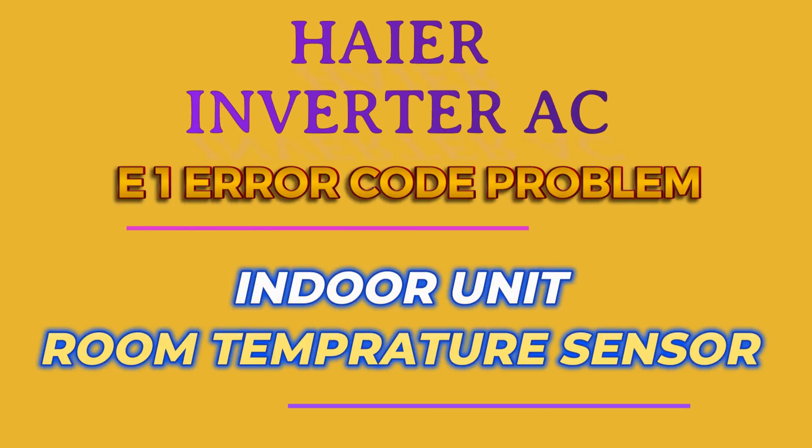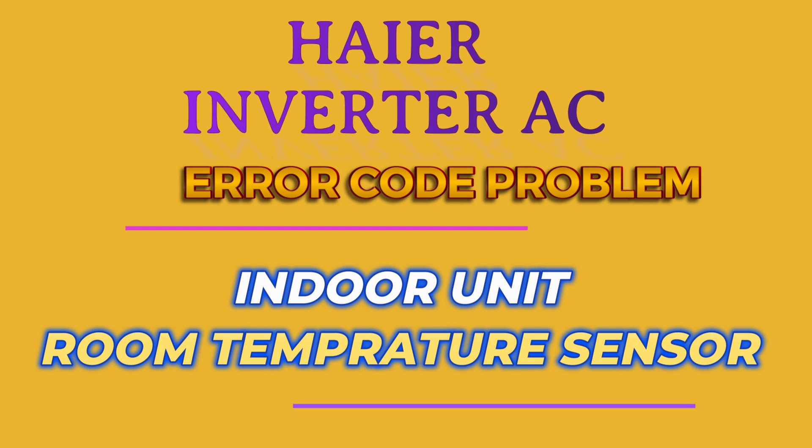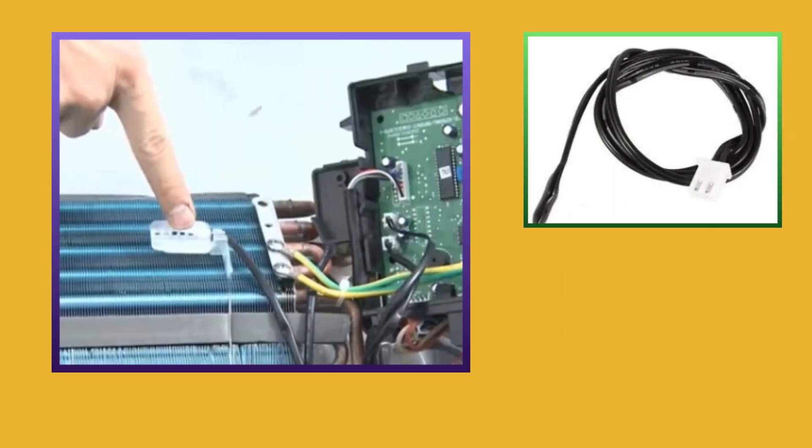If E1 error is coming in Haier AC, then it is the error of indoor unit room temperature sensor. This sensor is installed in the coil of the indoor unit. This error can occur in your AC due to three reasons.